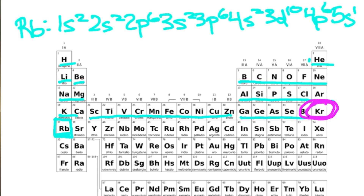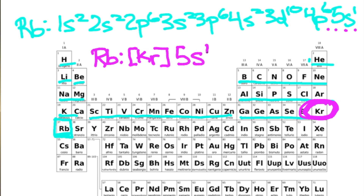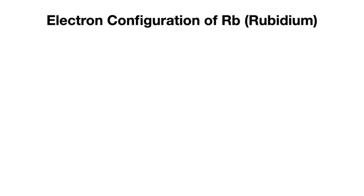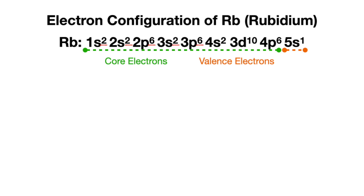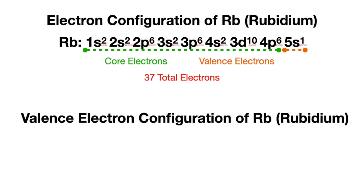For rubidium's valence electron configuration, go to the previous noble gas, which is krypton. Write rubidium's chemical symbol with a colon, then krypton in brackets, then the highest energy level electrons — which is only 5s1. Rubidium has 36 core electrons and one valence electron in its 5s subshell, totaling 37 electrons, meaning it has just one valence electron.